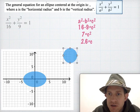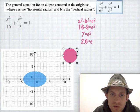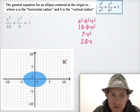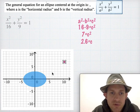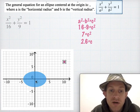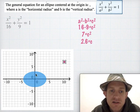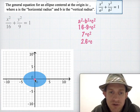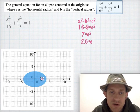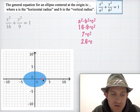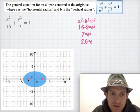Now we can draw the focus points. The focus points are always on the wider of the two axes — so this time they're side to side instead of up and down. We find the center and go left and right 2.6 units to place the two focus points.